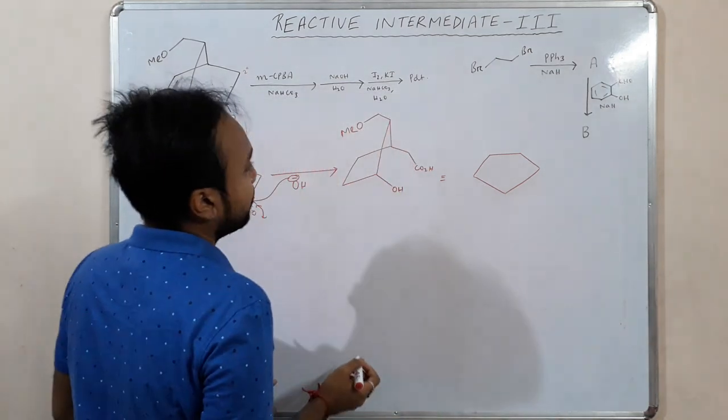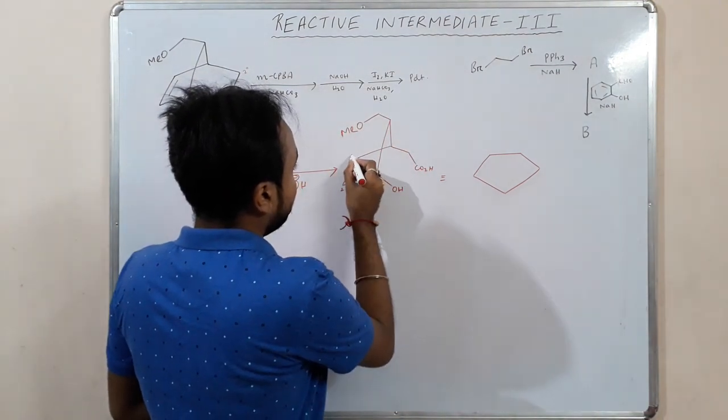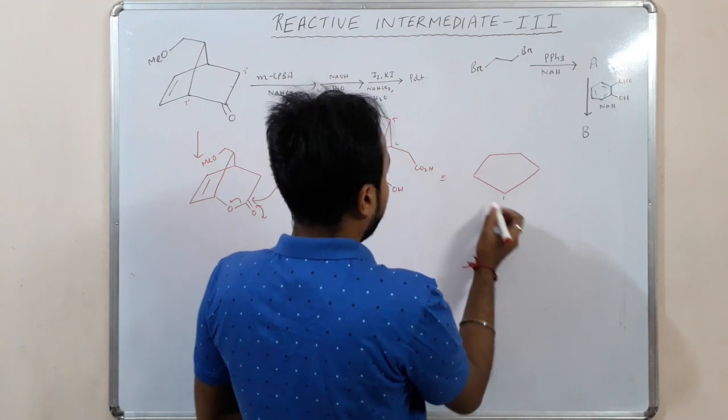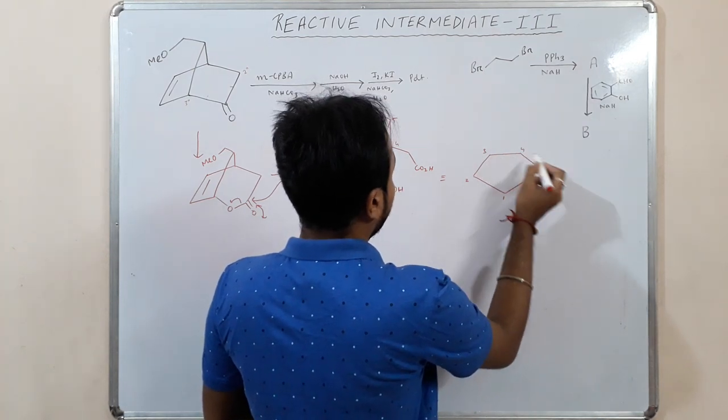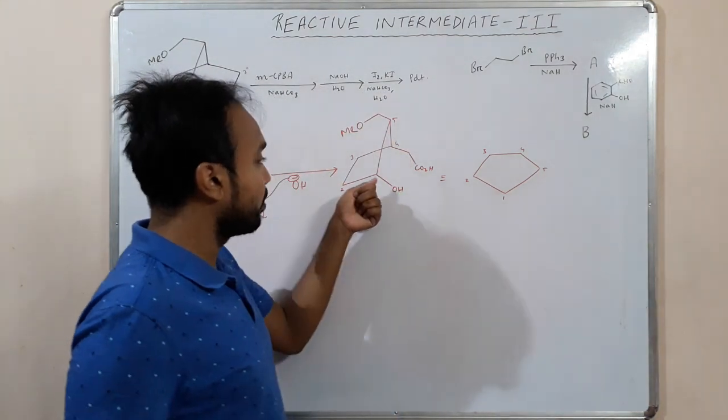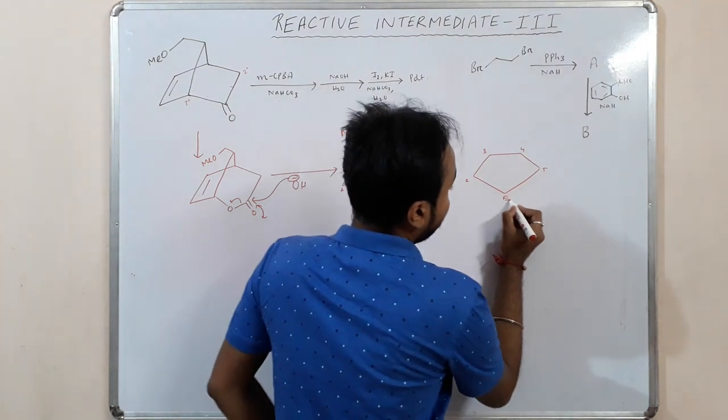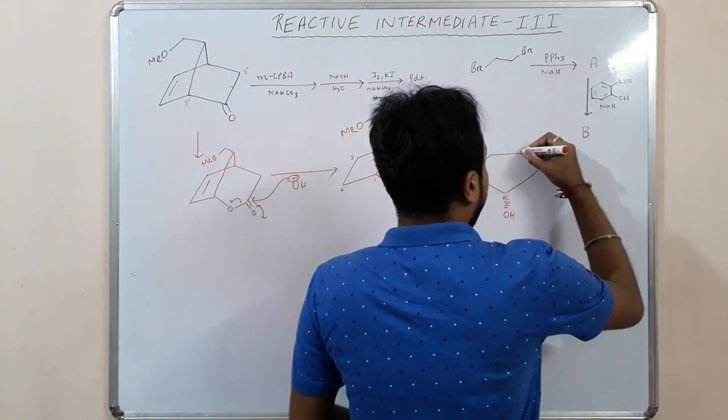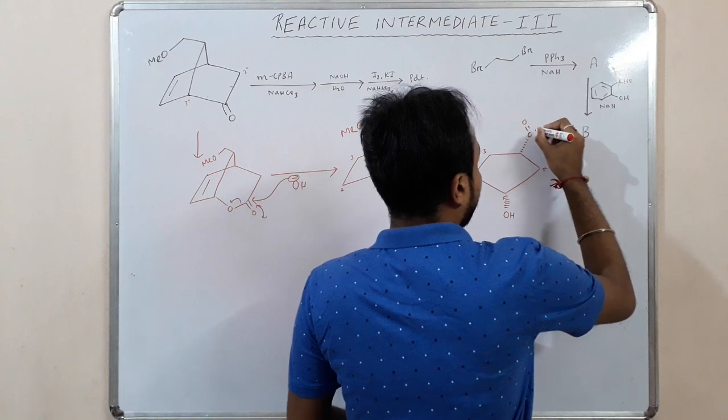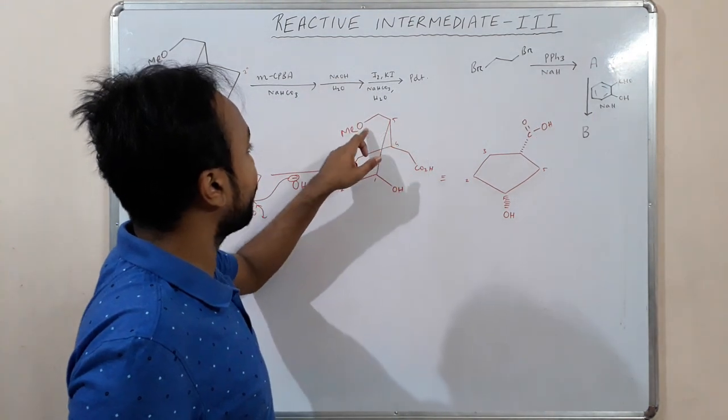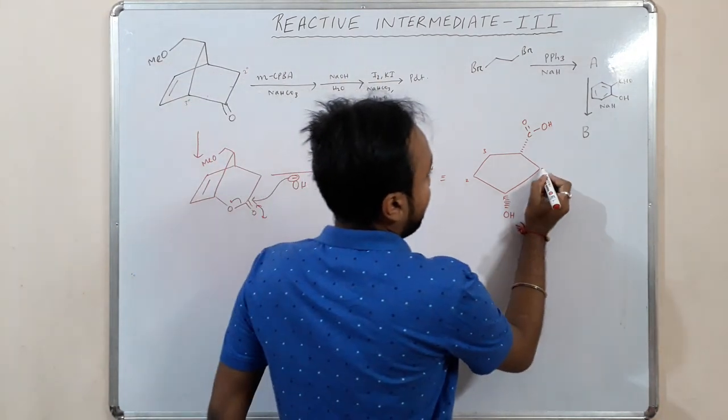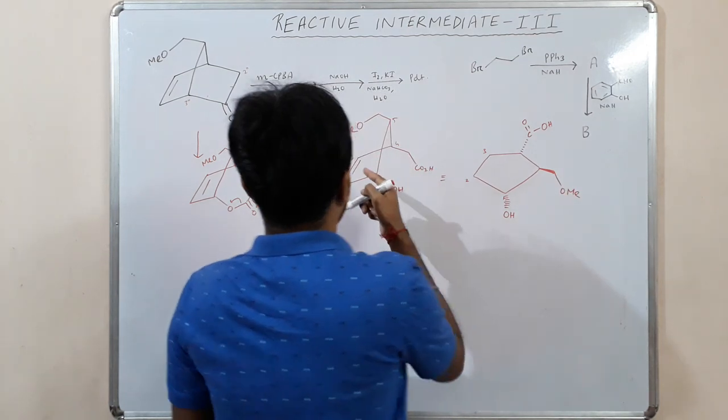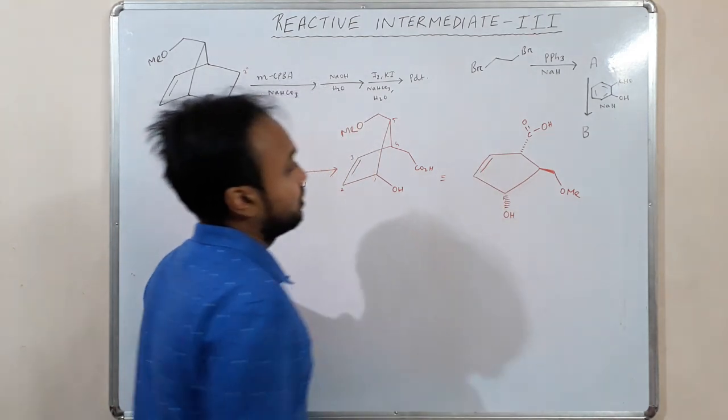Just rewriting this, we are writing like this. So this is 1, this is 2, this is 3, this is 4, this is 5. So this ring we are taking. In position 1 we have OH group down the plane, so the OH group will be down the plane. In 4 we have acid group again down the plane. In 5 we have OMe which is above the plane. At 2, 3 there is one double bond. Sorry, I forgot to add that. Here is a double bond.